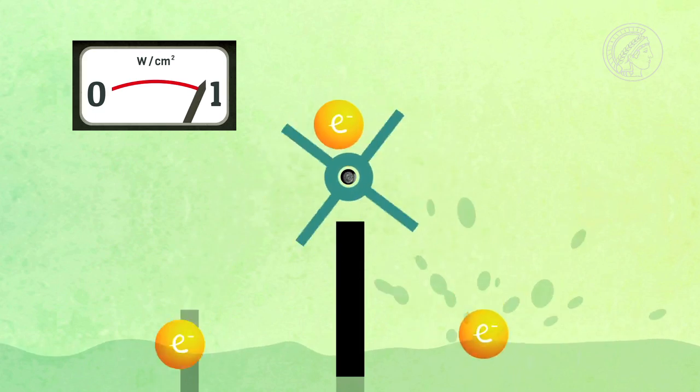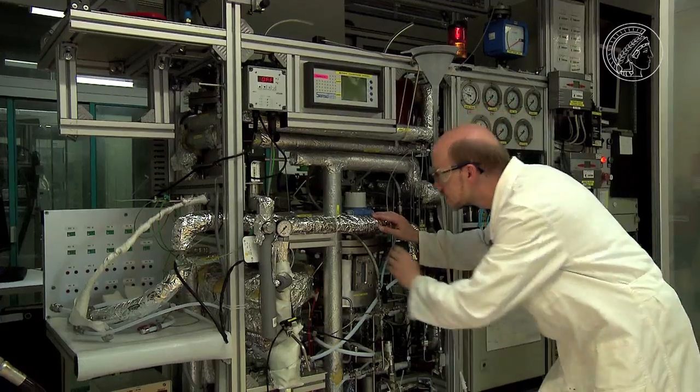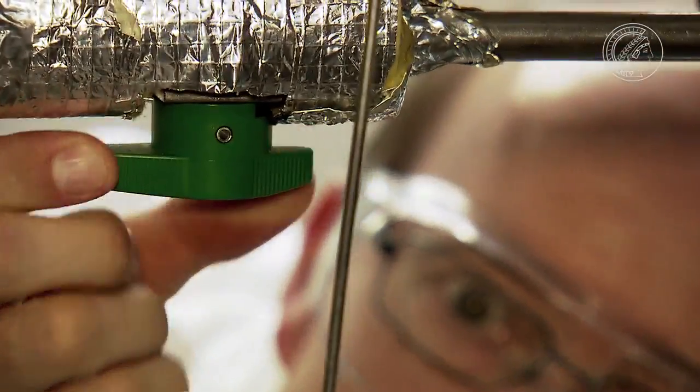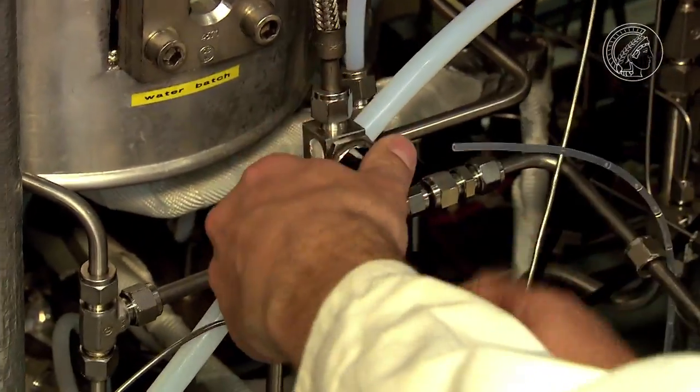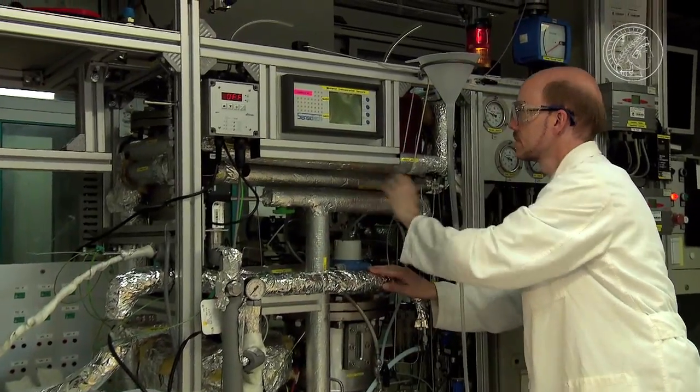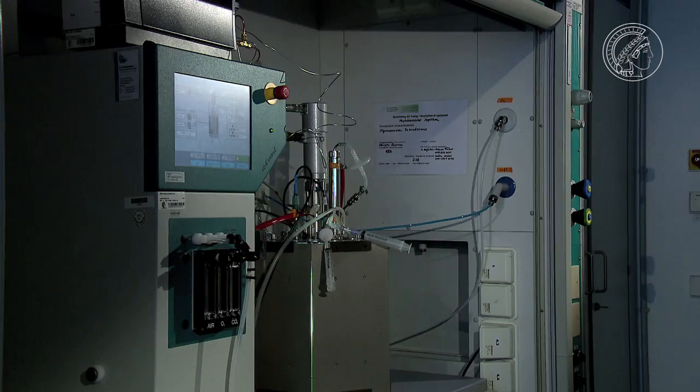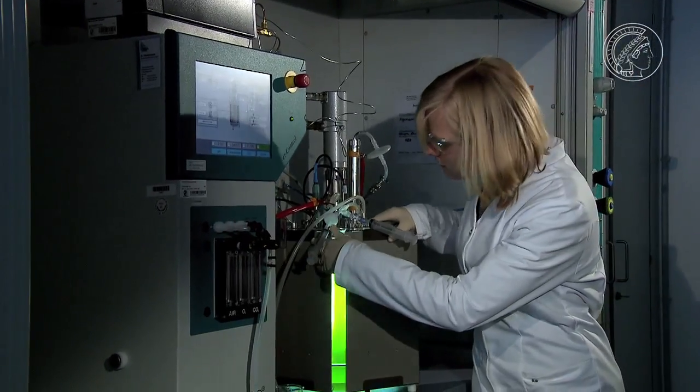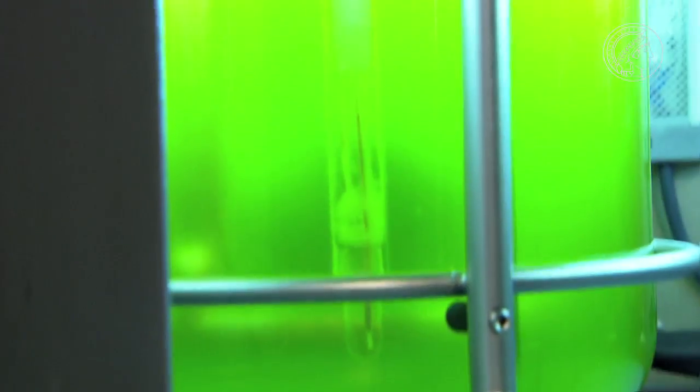The fuel cell is especially environmentally friendly when it uses hydrogen produced from wind or solar energy, or hydrogen from special reactors containing biomass. The scientists in Magdeburg are focusing on this method in one of their projects.